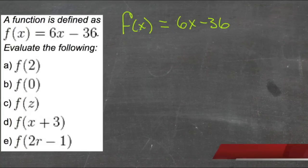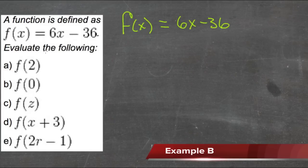A function is defined as f(x) equals 6x minus 36, and we need to evaluate it for these different variables down here on the bottom. So what we need to do to evaluate a function for a given value, we substitute that value in place of x.